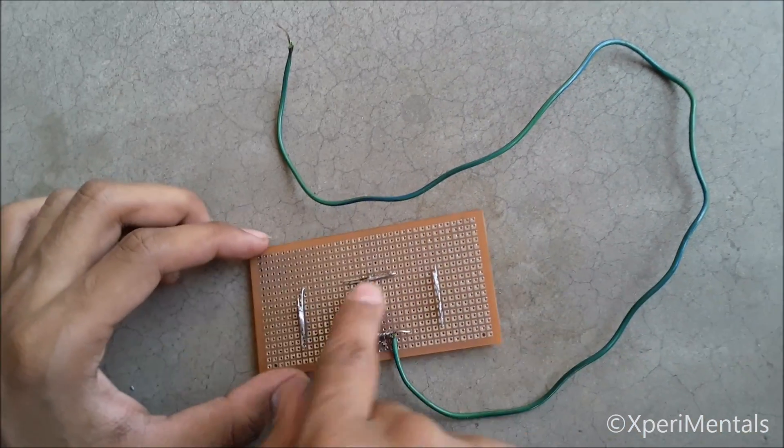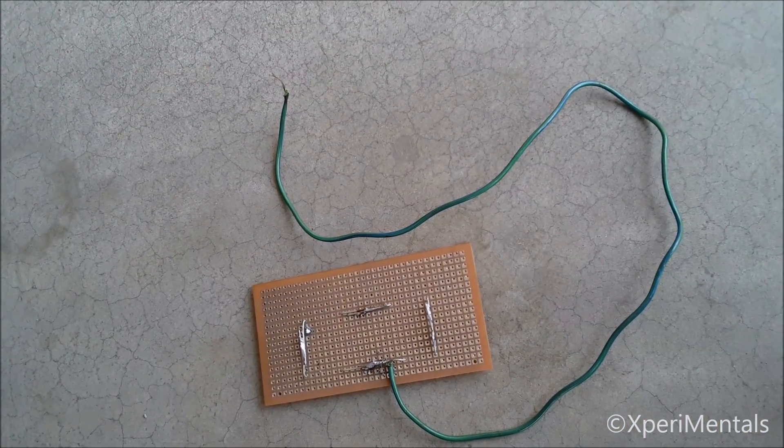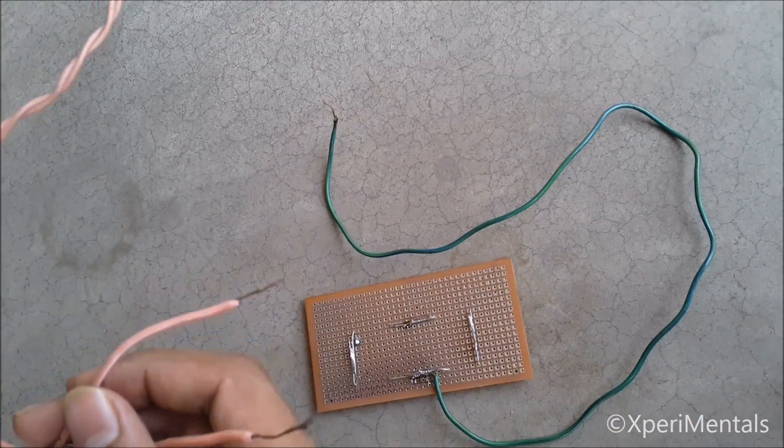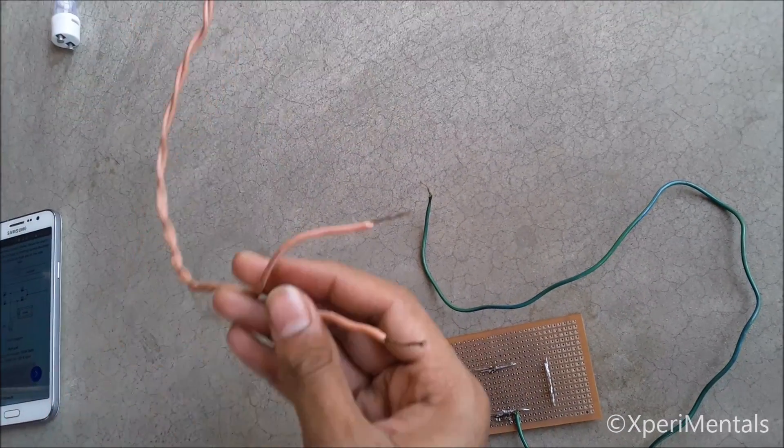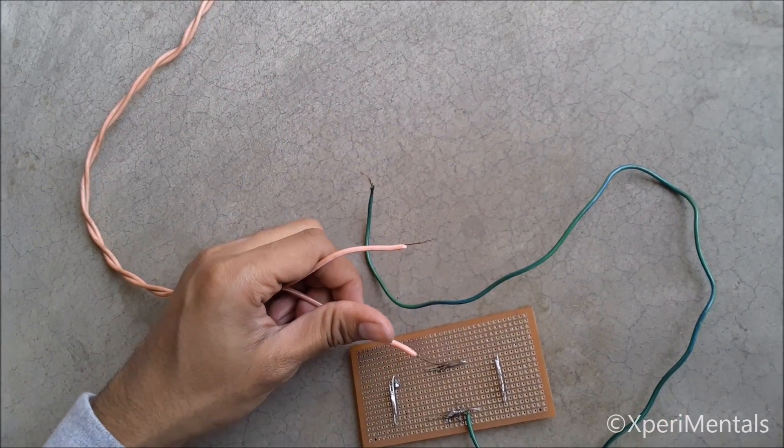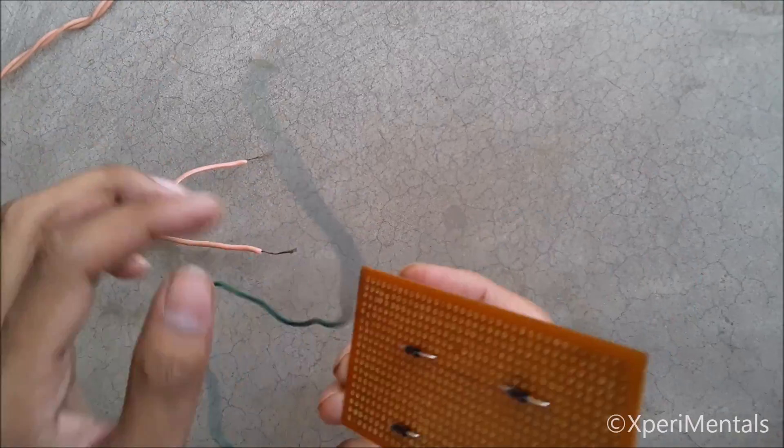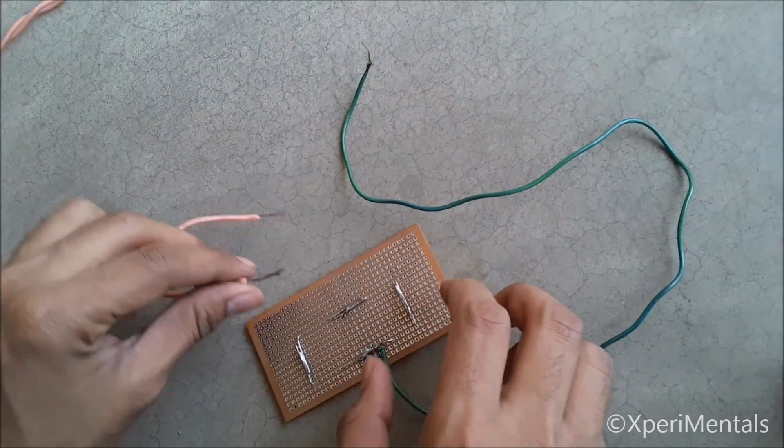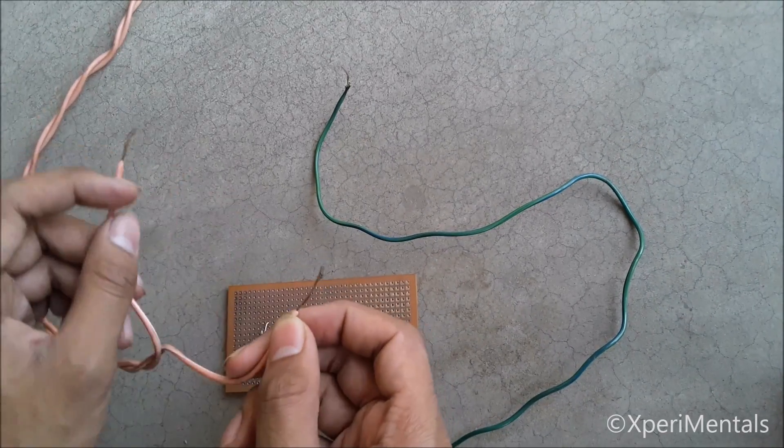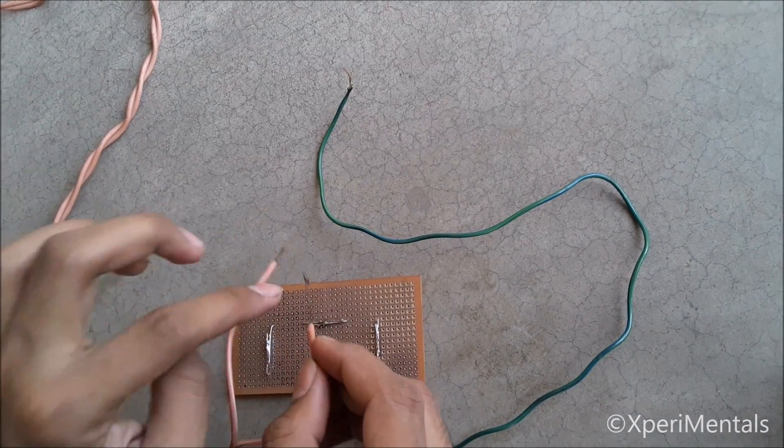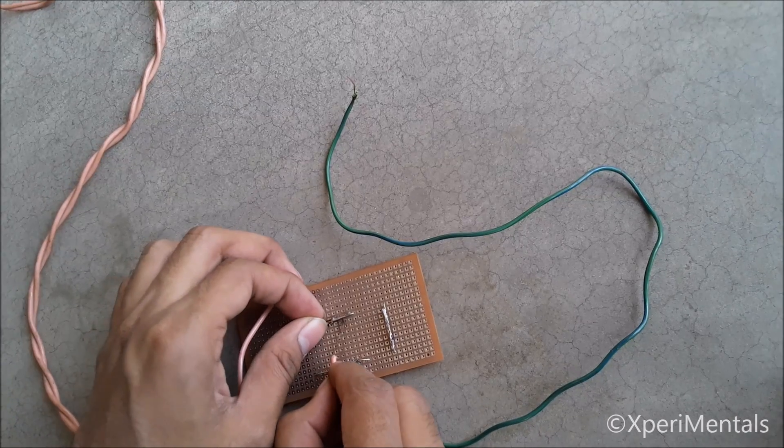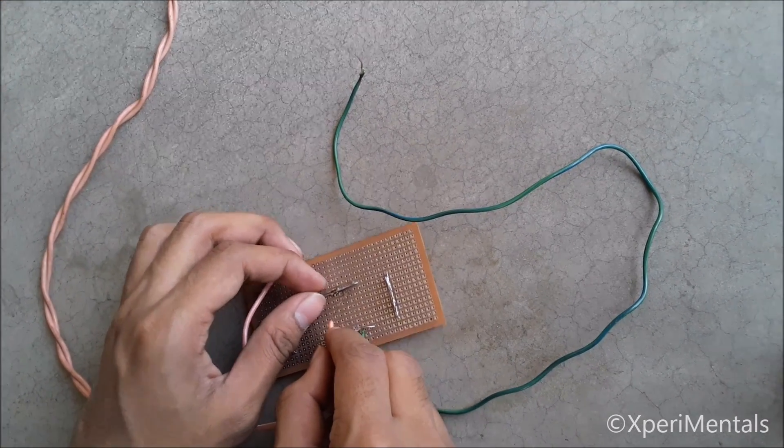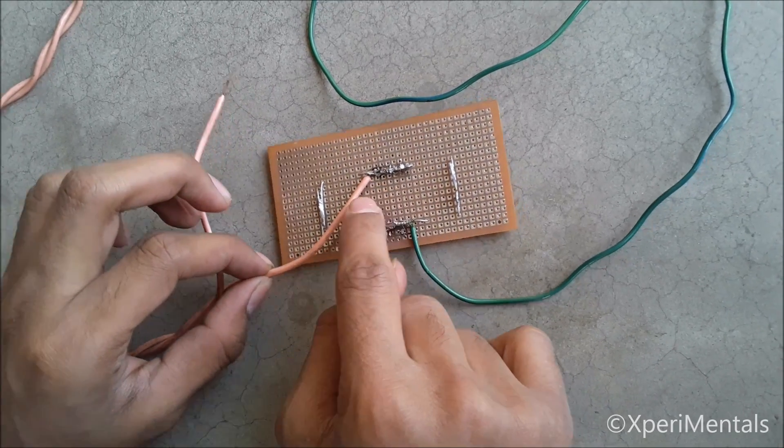Now we have to solder one wire of the plug-attached wire here, at the junction point of the upper two diodes. We are going to solder one wire with the junction point. We have soldered this wire with the junction point.